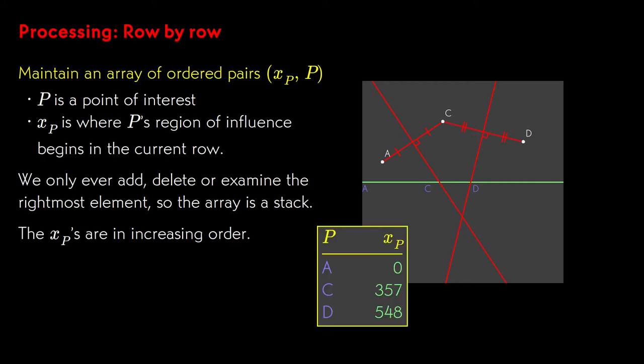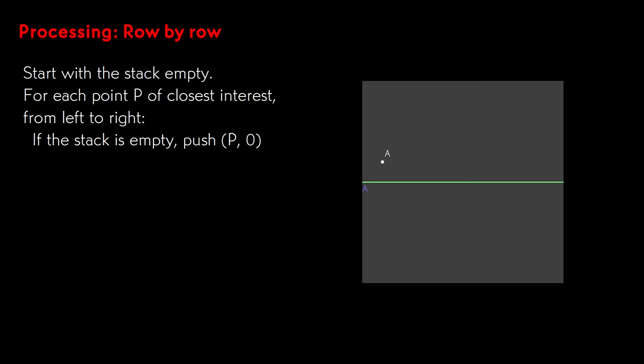In the points set shown here, we see in the array that point A's region of influence starts at the left edge, point C's starts about a third of the way in, and point D's is just over halfway across. We begin with the stack empty, and the first point we encounter will always have its region of influence tentatively begin at the left edge of the row.